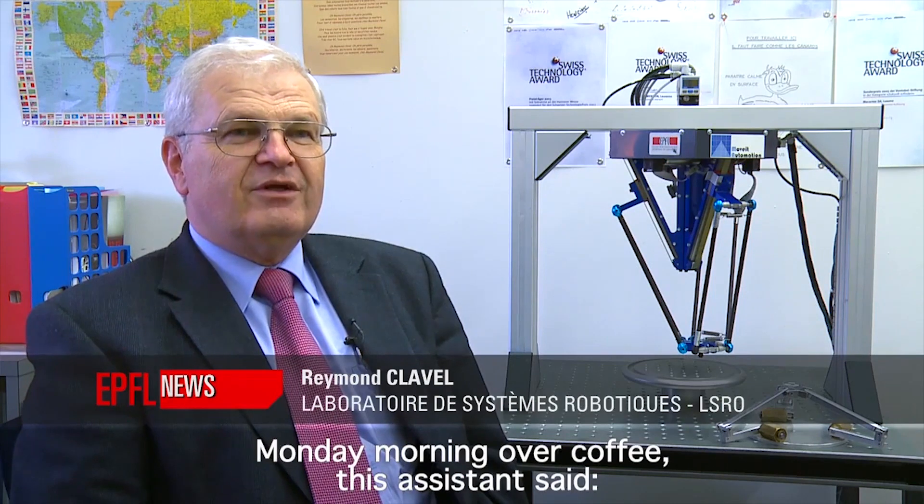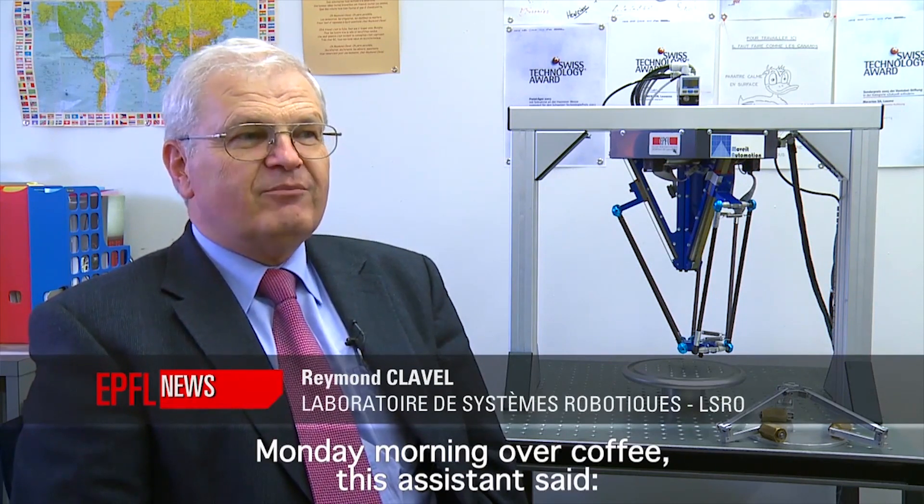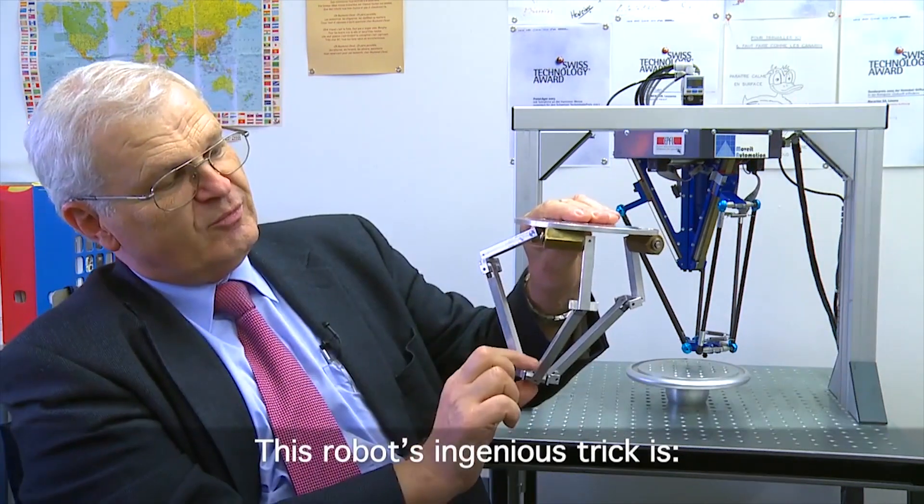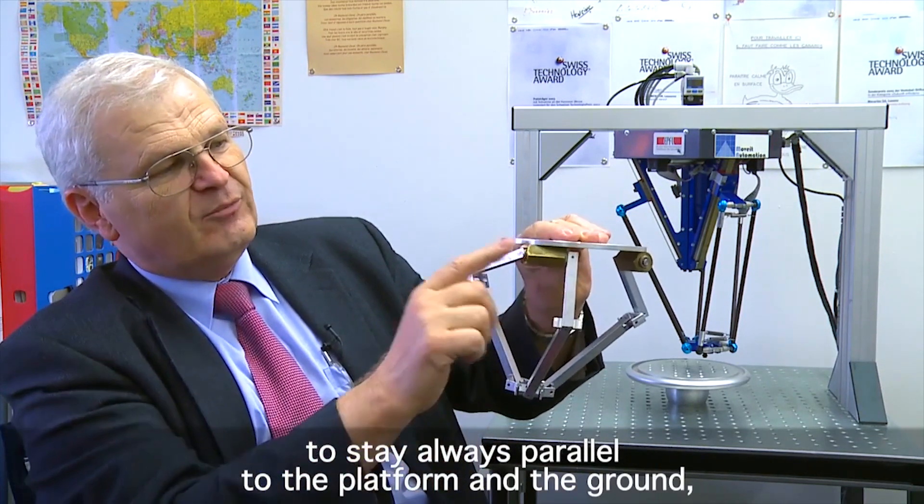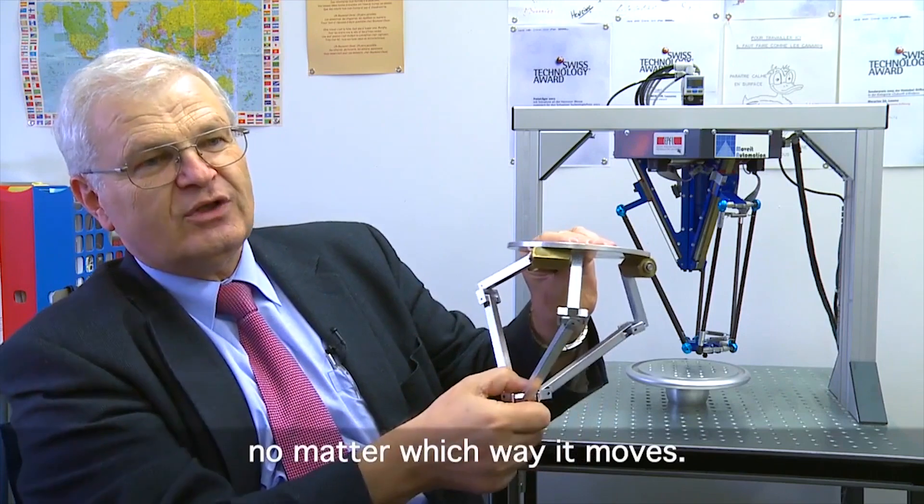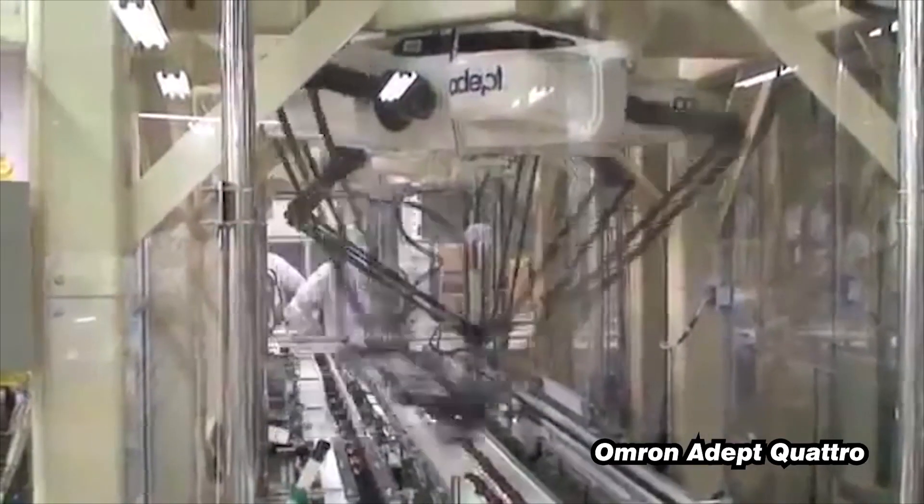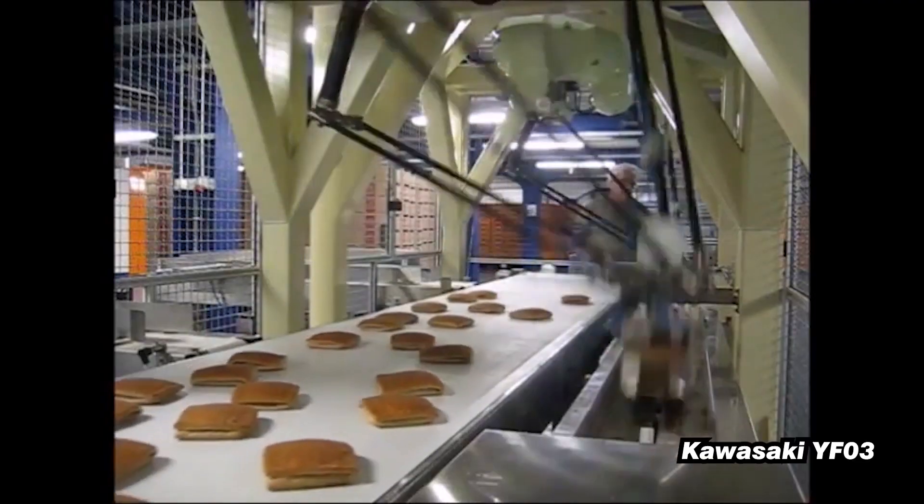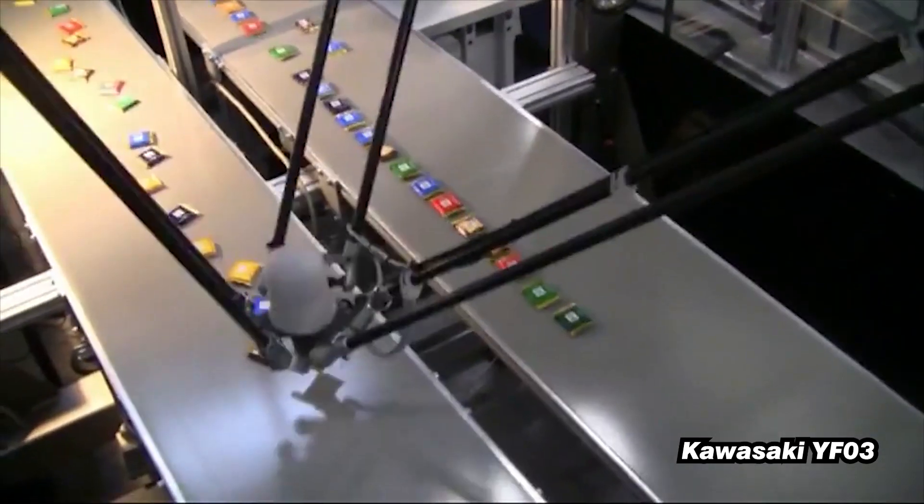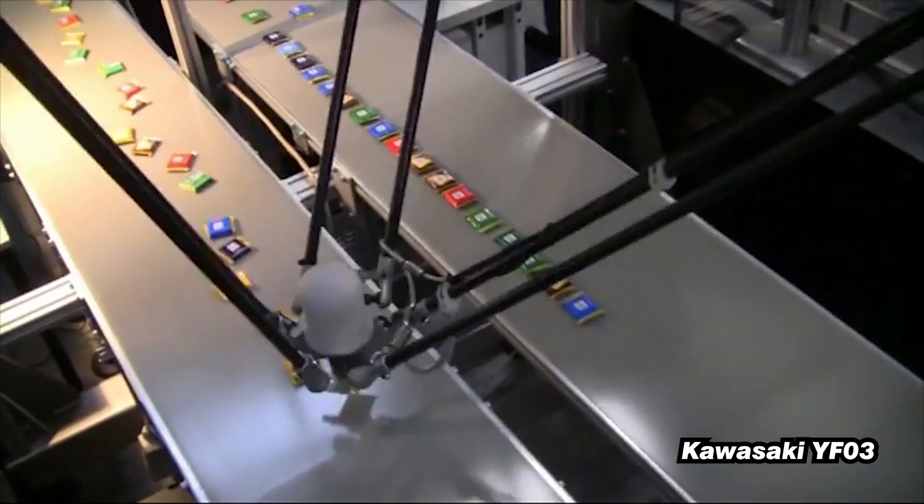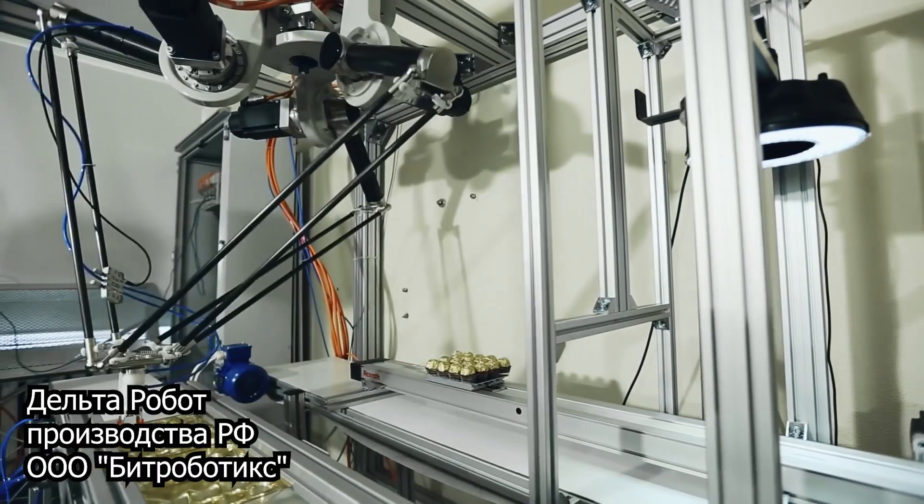For a start, a little history. The Delta robot was invented and patented by Raymond Clevel in the early 80s. From then to this day, Delta robots are used in production on packaging and sorting lines. Thanks to the simple and lightweight design, such a robot can move with amazing speed and accuracy. Industrial designs can reach accelerations up to 30 g and effector speeds up to 10 meters per second.